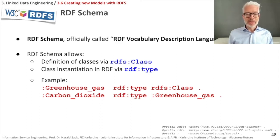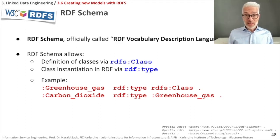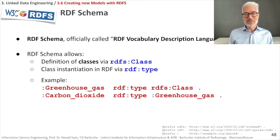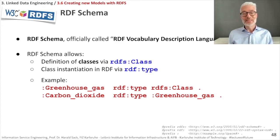RDF schema is officially called RDF vocabulary description language. It allows you, for example, the definition of classes as well as class instantiation. The vocabulary we need: to identify a class, we have rdfs:Class. And if you want to instantiate that class, we have rdf:type as an instantiation. If you want to say something is a class, then we can say greenhouse gas is of rdf:type rdfs:Class, which means this is an instance of the superclass of all classes, which is rdfs:Class.